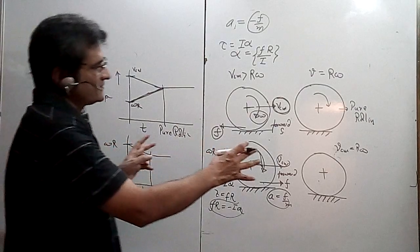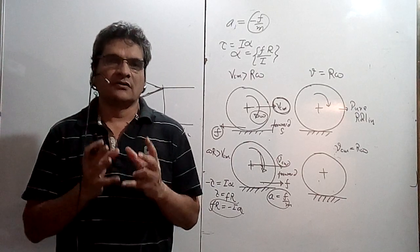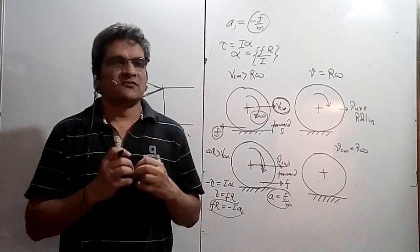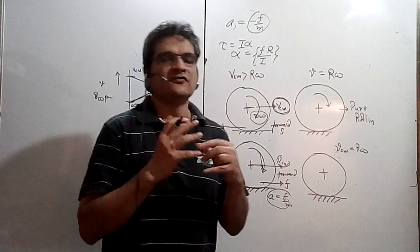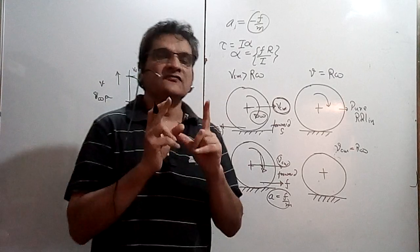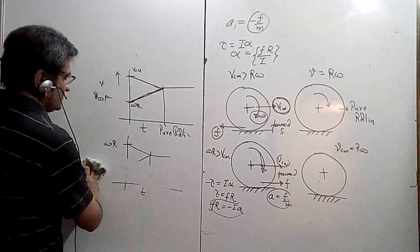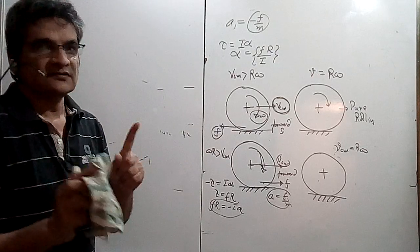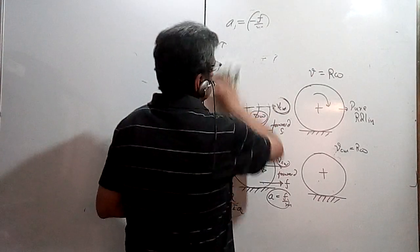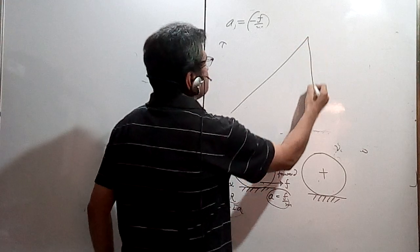Once pure rolling starts, do you still need a friction force? Can pure rolling happen on a frictionless surface? It can happen — if there is no distortion of the sphere and the point of contact is a single point, you don't need any force to maintain it in regular motion. If it has acquired V equals r·omega then you don't need friction force for horizontal movement in ideal situations, but otherwise you will need force due to distortion at the point of contact.